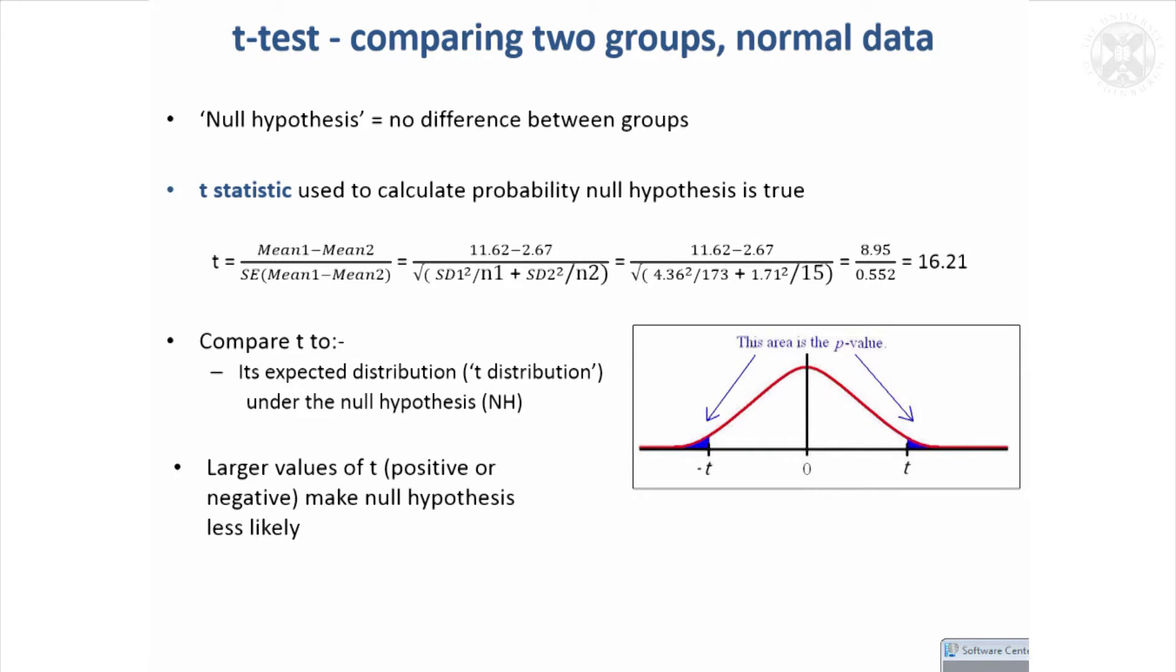So you saw the null distribution we had before. That's in fact something called a t-distribution, which is the distribution that this t-statistic would be expected to have if there was no difference between the means. So it would look something like this. And what we want to look at is the value of our t-statistic, the 16.21, on that distribution.